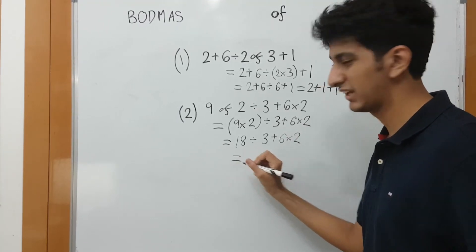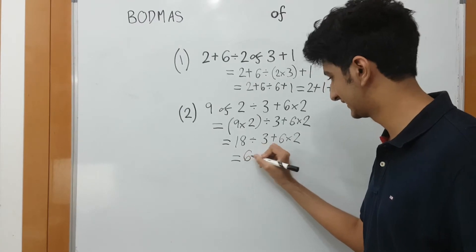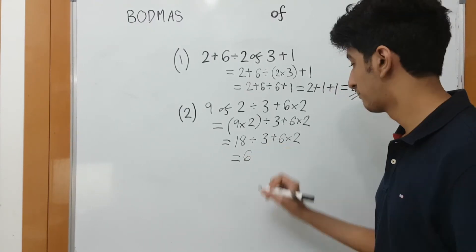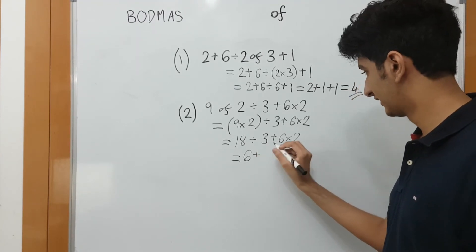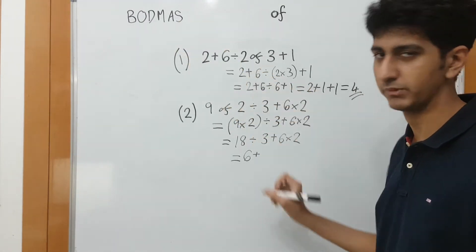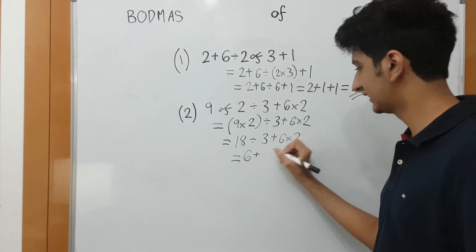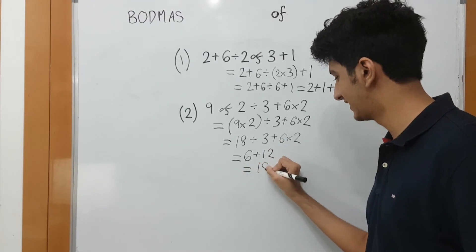So, 18 divided by 3 plus 6 into 2. Now, division and multiplication left to right. 18 divided by 3 is 6. Then, what will come? Plus. Evaluate not. 3 plus 6 is not. This is plus 6 into 2 by BODMAS. And 6 into 2 is our 12. That is 18.